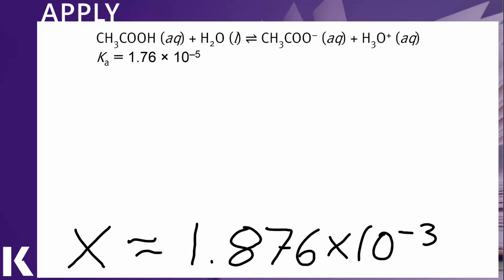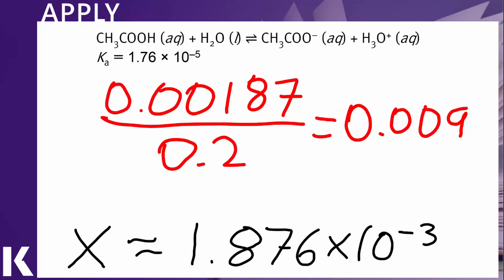So the last step is to check our value for the equilibrium concentration, compare it to the starting concentration, and make sure that we are equal to or less than 5% of that starting concentration. So our 1.87 times 10 to the minus three is 0.00187. We divide that by the starting concentration of the reactant, 0.2. We get a value of 0.009, which is in fact less than 0.05, less than 5%. So here we are safe in using the approximation.